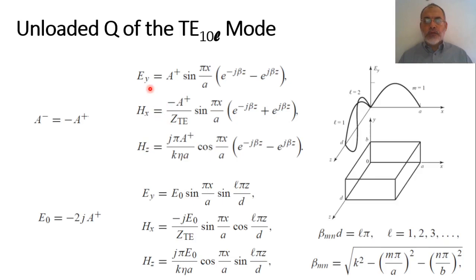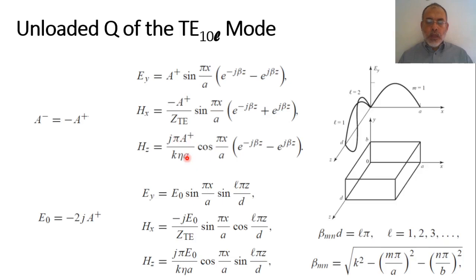The transverse magnetic field HX has amplitude equal to the electric field divided by the wave impedance ZTE of the TE10 mode. Its distribution is sin(πx/a), similar to the electric field. For HX, both the forward and backward propagating waves have the same sign — a positive sign instead of a negative sign. The longitudinal component HZ depends on the derivative of the transverse function, giving cos(πx/a) multiplied by π/a, and also multiplied by j/k.